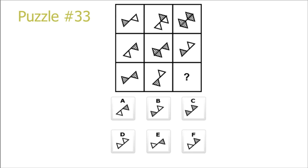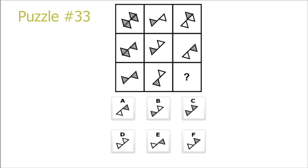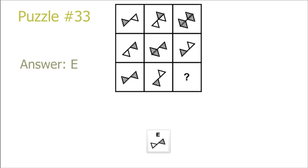Puzzle 33. This is another diagonal puzzle from top right to bottom left. Comparing the first and second row in this diagonal, the right side is always changed. The rule is that the top right is prioritized to be swapped with the bottom right, but if there is no top right, the bottom right is swapped for the top right. Between the second and third row, the bottom left square is prioritized to swap to the top side, but if there are none, the top left is swapped out for the bottom right. So if we take picture 6 and swap over the bottom left triangle, E is the correct solution.